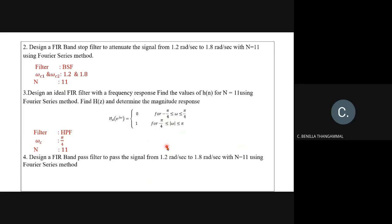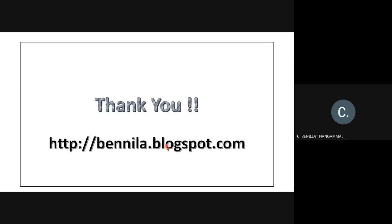Another example: design a FIR band pass filter to pass the signal from 1.2 rad/s to 1.8 rad/s with N = 11 using Fourier series method. The filter type is band pass, with ωc1 = 1.2 and ωc2 = 1.8. The lower value is ωc1 and the larger value is ωc2, and N = 11. Thank you students.